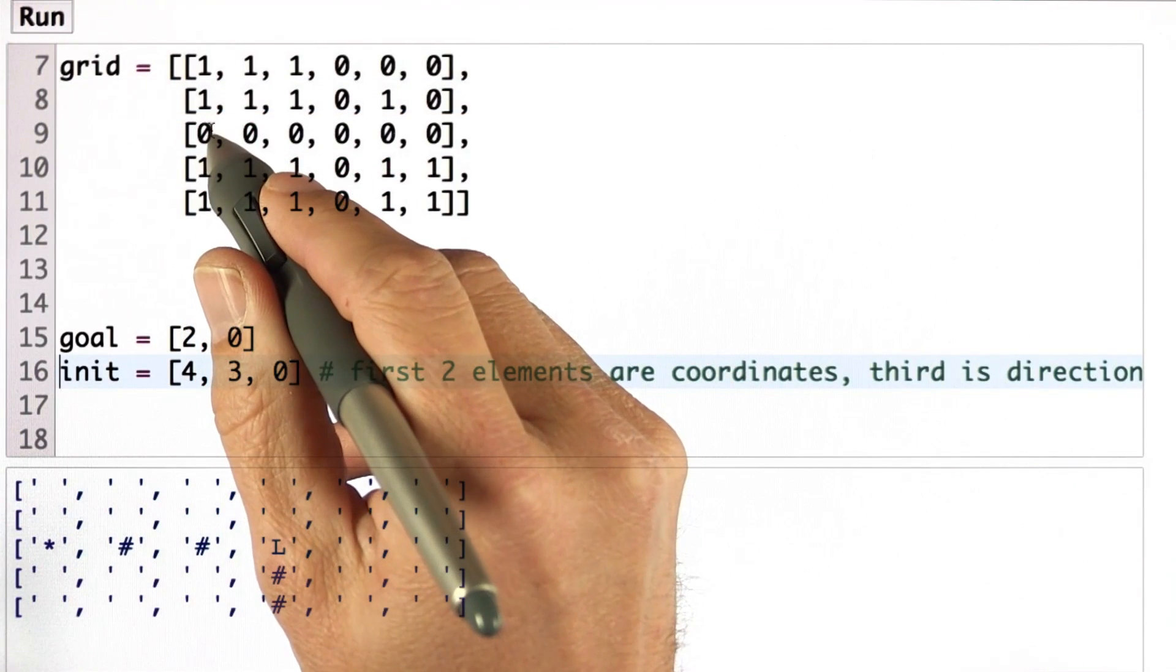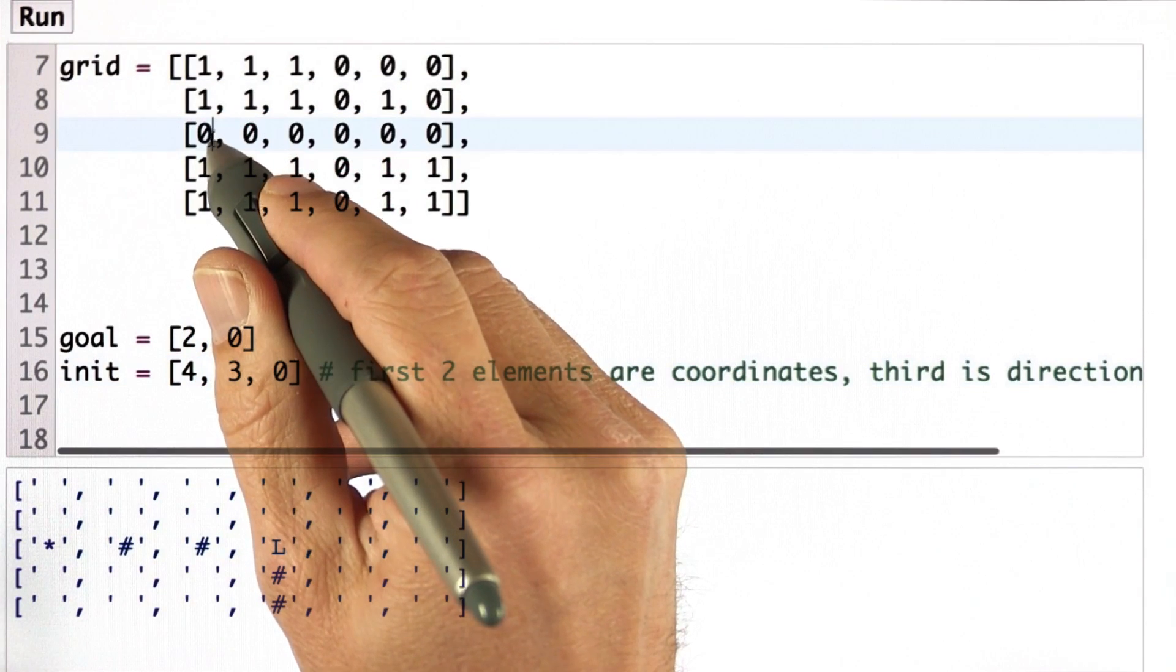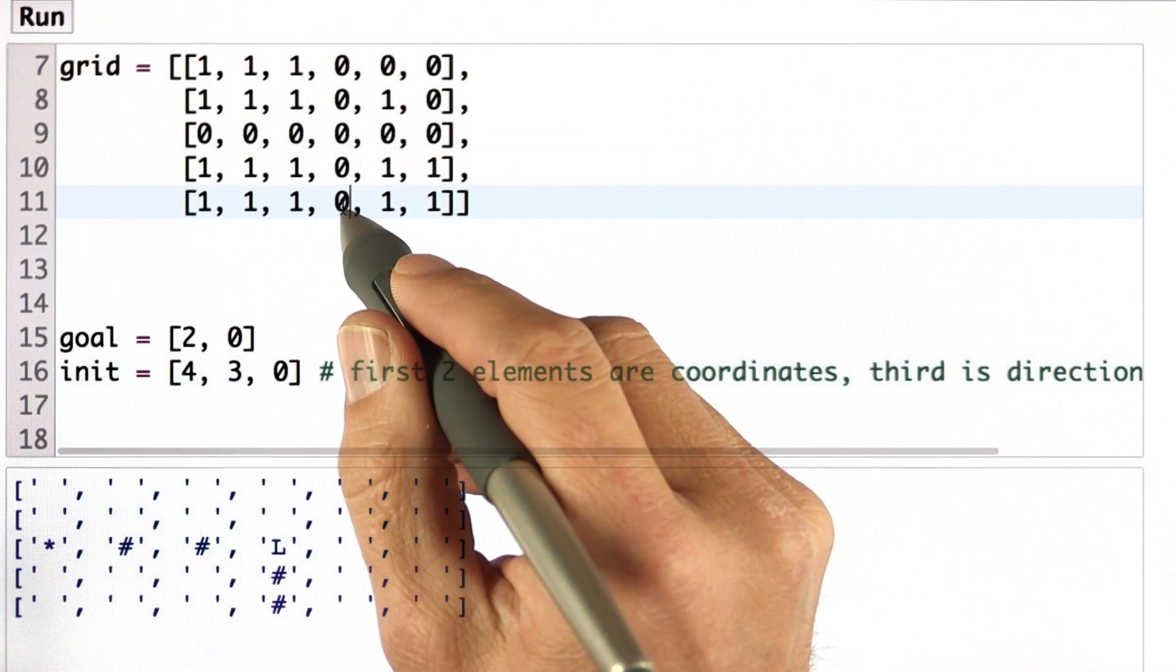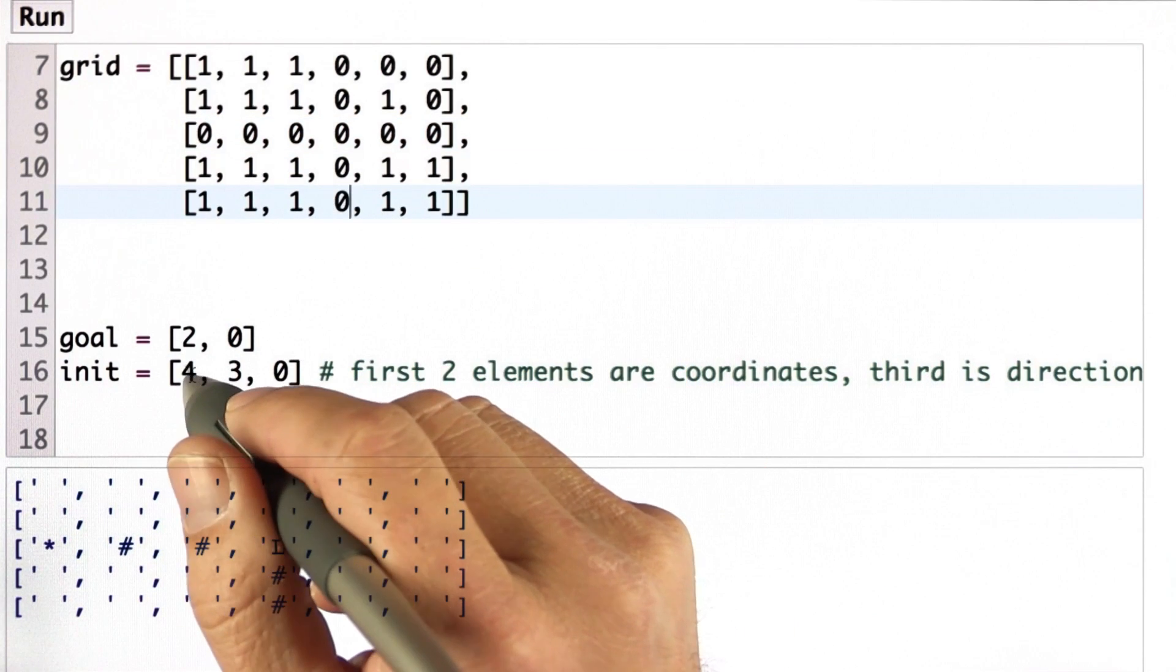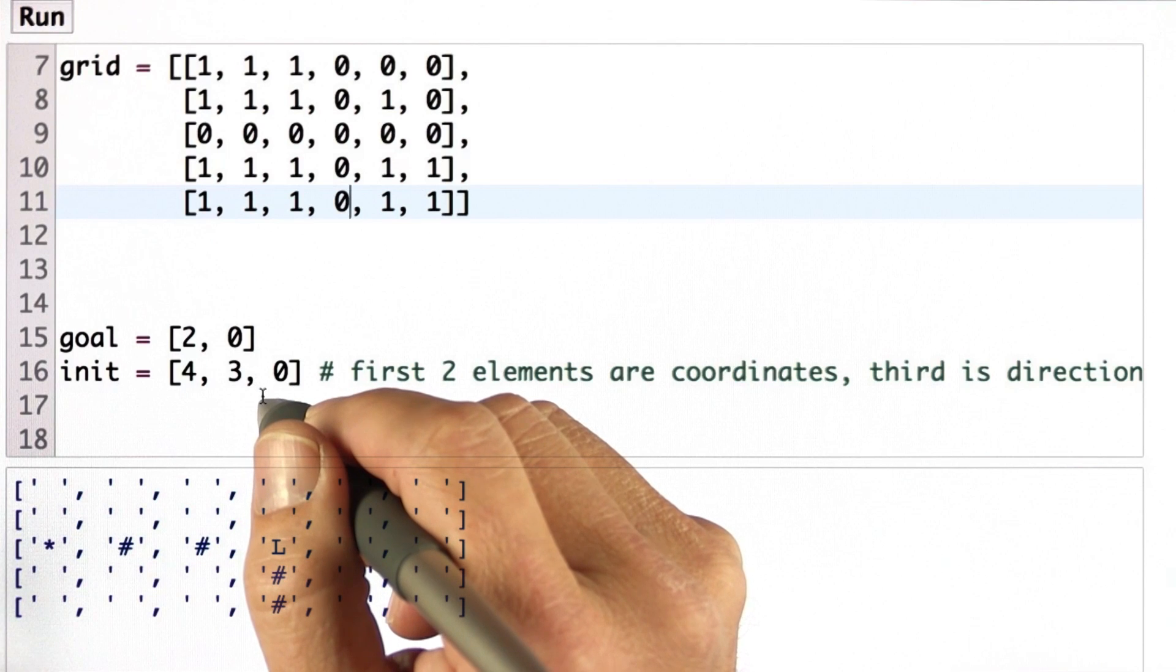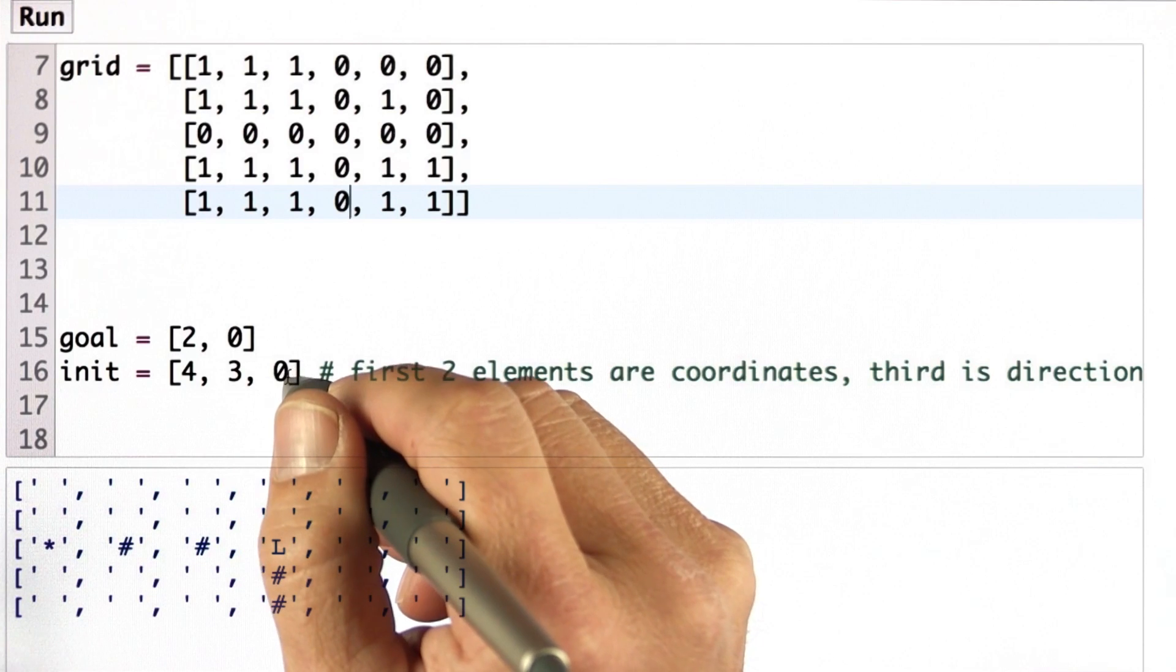Our goal is to move to cell 2,0, which is the one over here. Our initial state is up here, and the initial state has not just a position of 4,3, but also an orientation, 0. So it's a three-dimensional state.